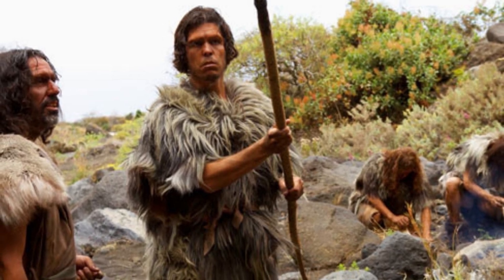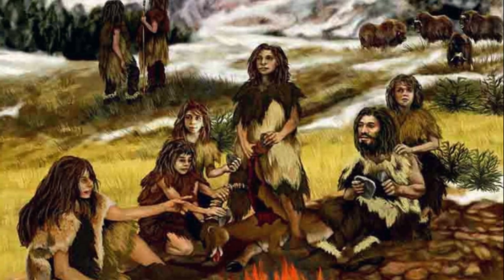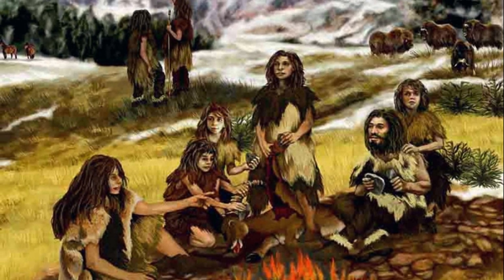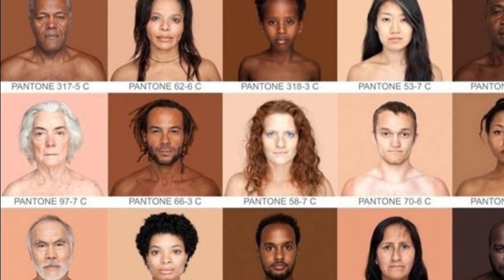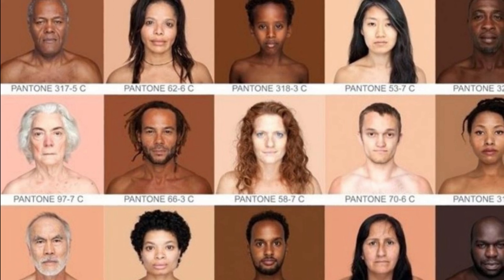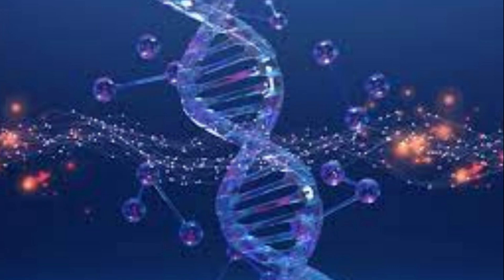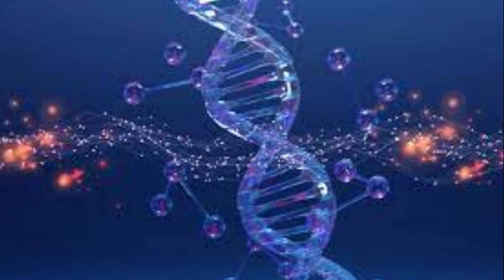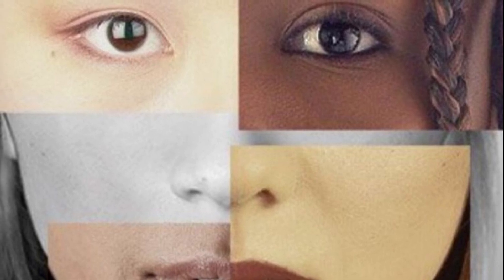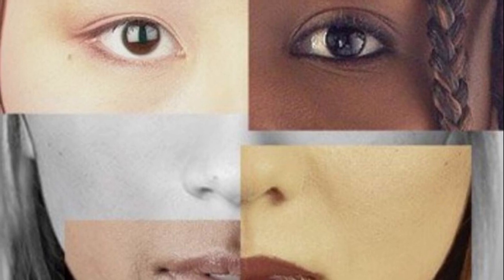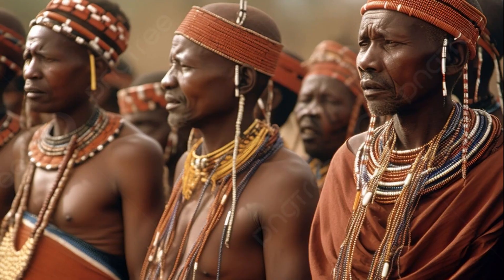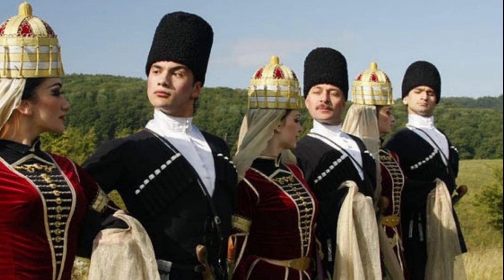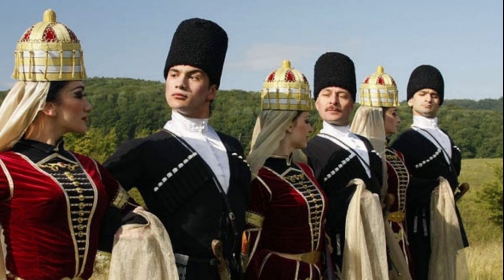Modern genetic studies, using techniques such as DNA analysis, have provided a clearer view of human diversity and the origin of populations. These investigations have revealed that most genetic variation is found within populations rather than between them. This means that genetic differences between human populations are much smaller than we could have imagined, and that human diversity is the result of the gradual accumulation of small genetic differences over time. Therefore, the origin of human races cannot be attributed to a clear biological separation, since we share a great genetic similarity. Human diversity is the result of local adaptations to different environments and of migrations and historical mixtures between populations. It is important to recognize and celebrate this diversity as a testament to the human ability to adapt and thrive in different circumstances.